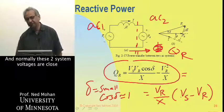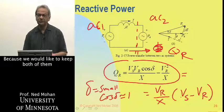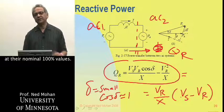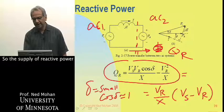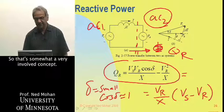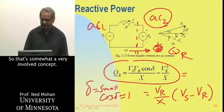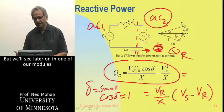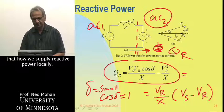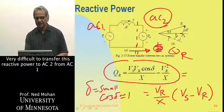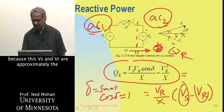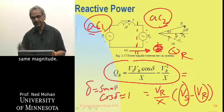Normally these two system voltages are very close to each other, because we want to keep both at their nominal 100% values. So the supply of reactive power to AC system 2 really becomes a local affair. It's very difficult to transfer reactive power from AC system 1 to AC system 2 because Vs and Vr are approximately the same magnitude.